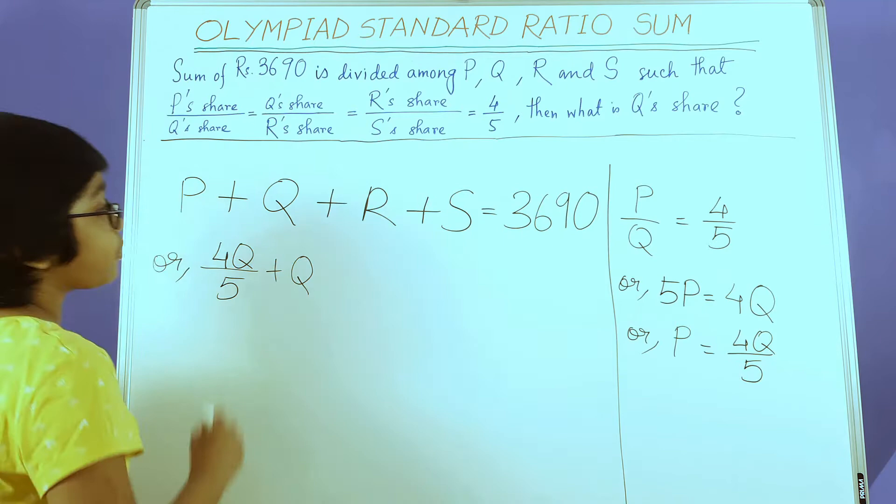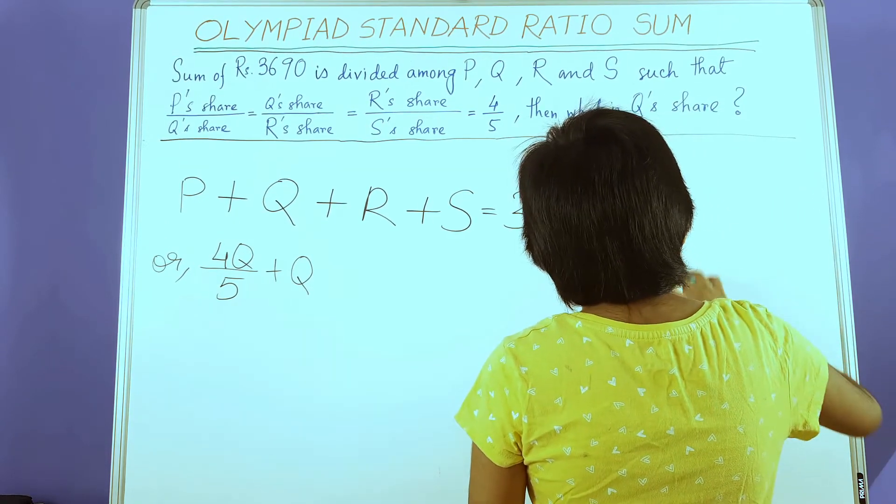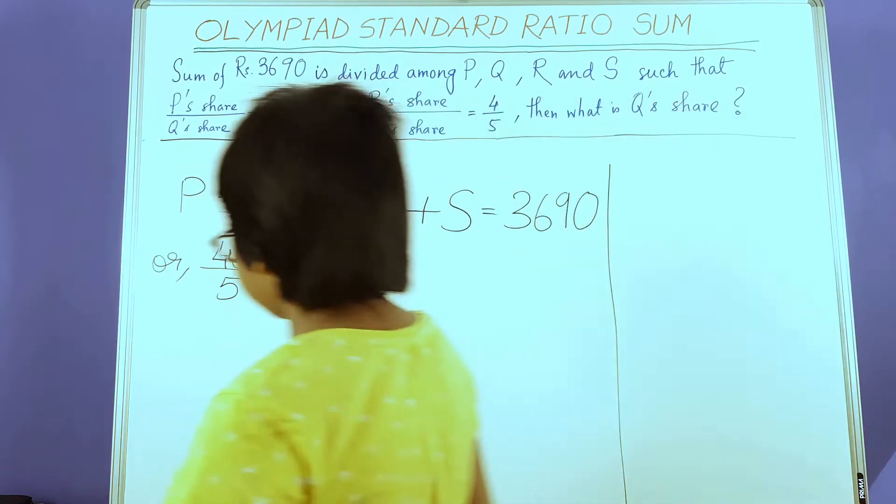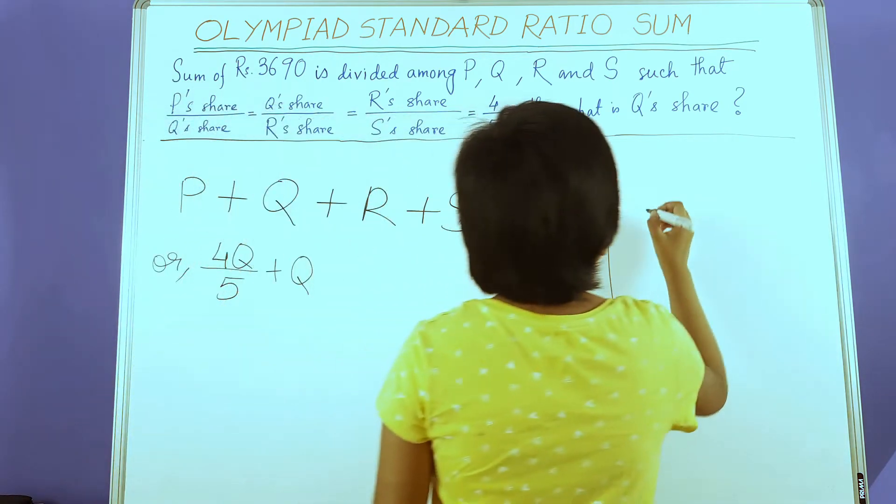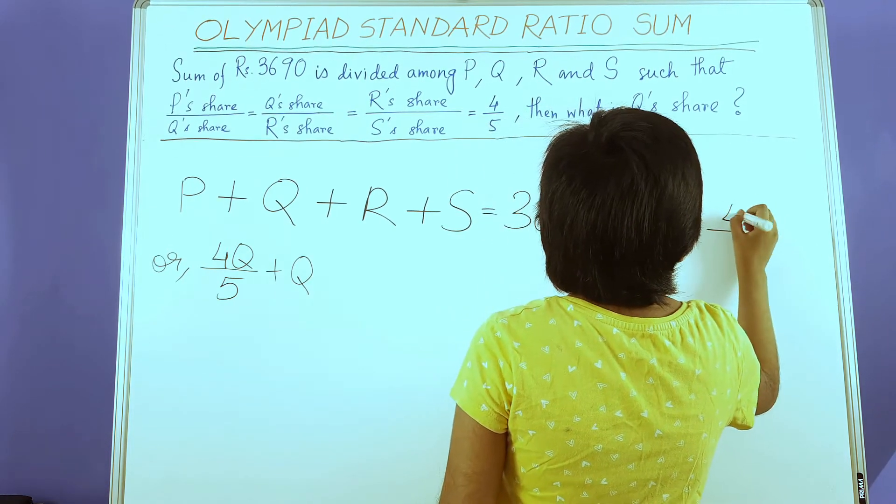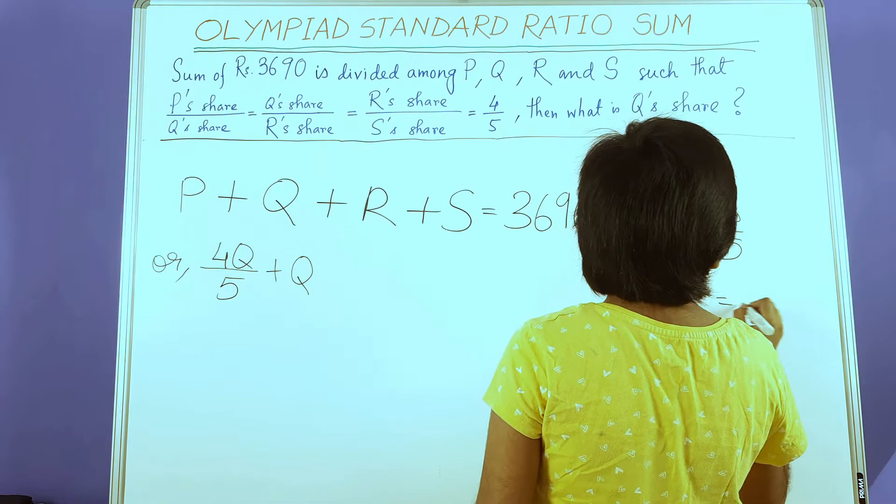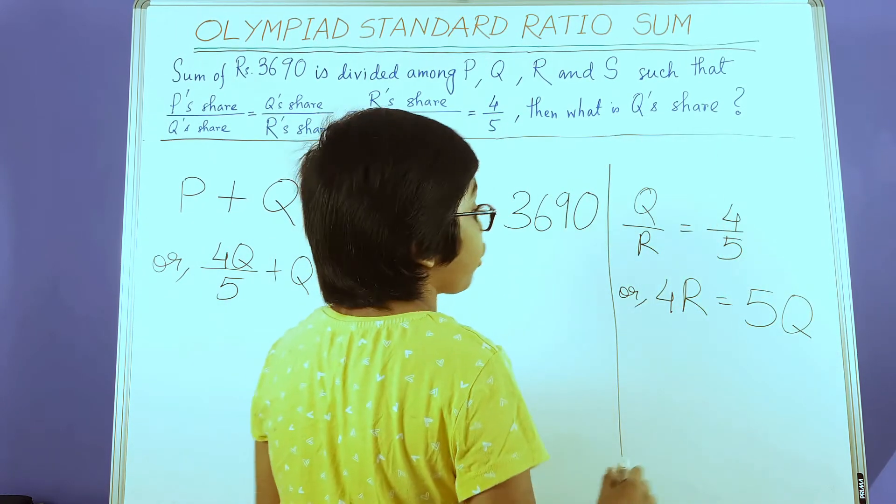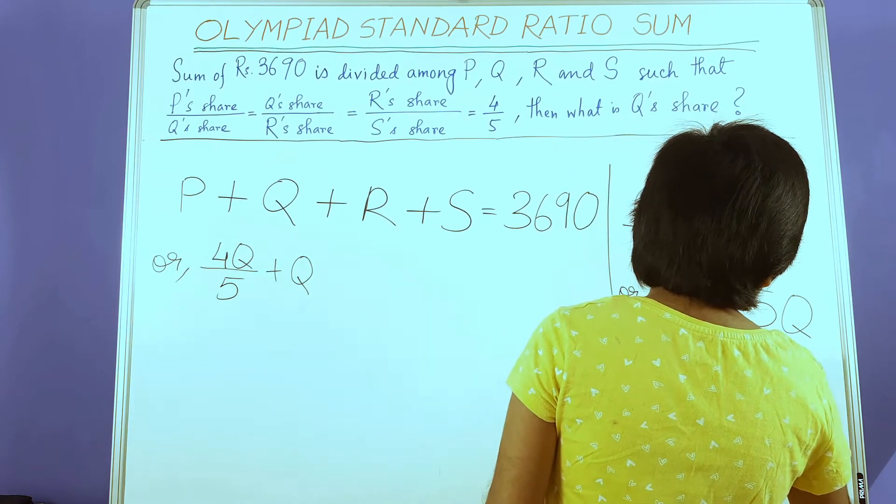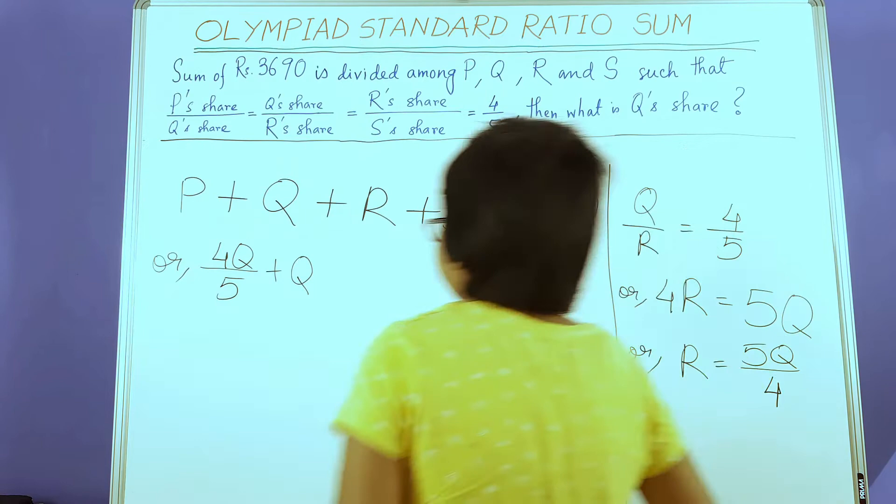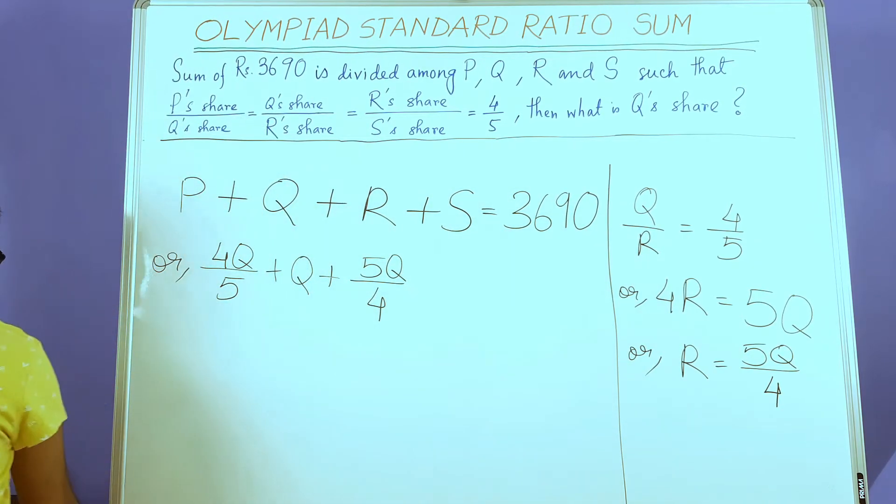We have Q. Now we have to get R. To get R, we use the ratio Q by R equals 4 by 5. Again, 4R = 5Q. I've done cross multiplication. Or, R = 5Q by 4. Before we forget it, please write it down.